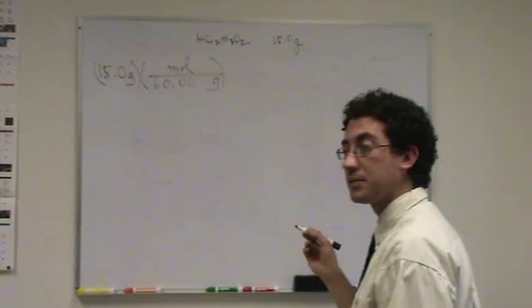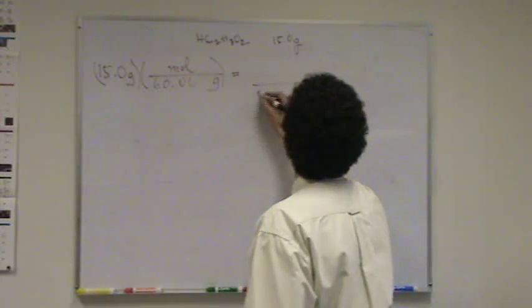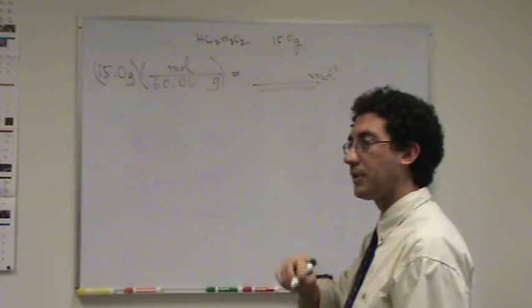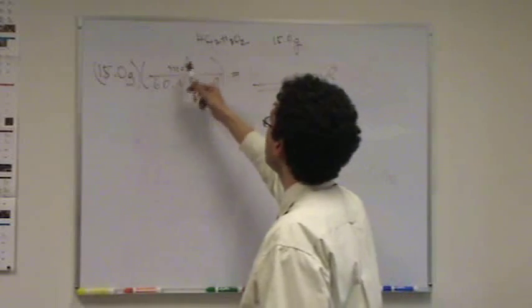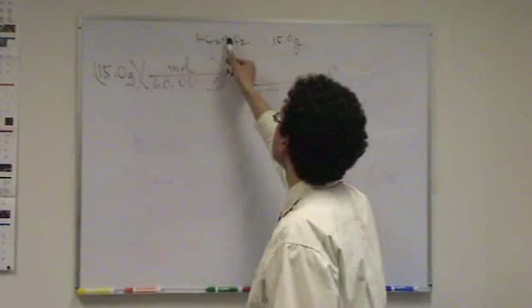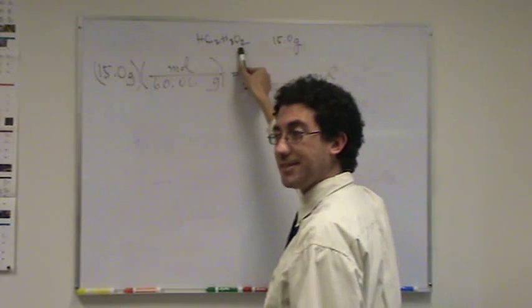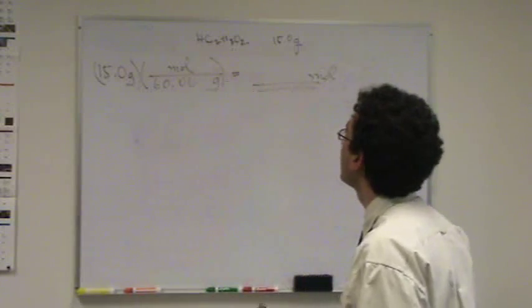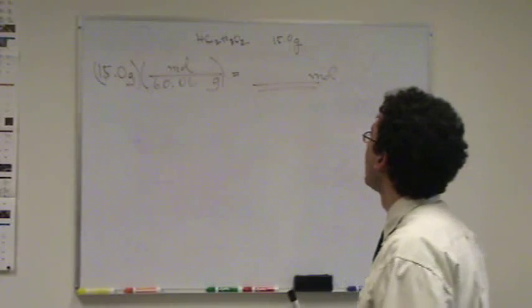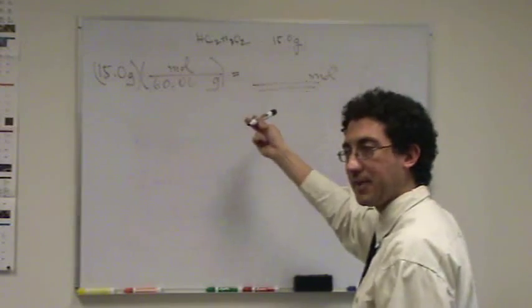So this will give me moles. You get 60.06 by adding all the atomic masses of all the different atoms. 60.06 comes from two carbons at 12, plus four hydrogens at 1, plus two oxygens at 16. What's the name of this again? Acetic acid. If you want to calculate that at home, that's fine.